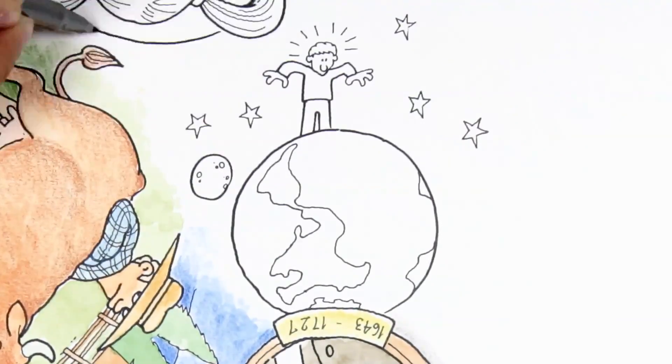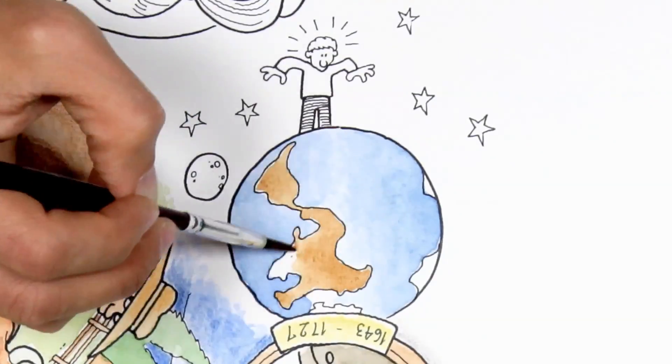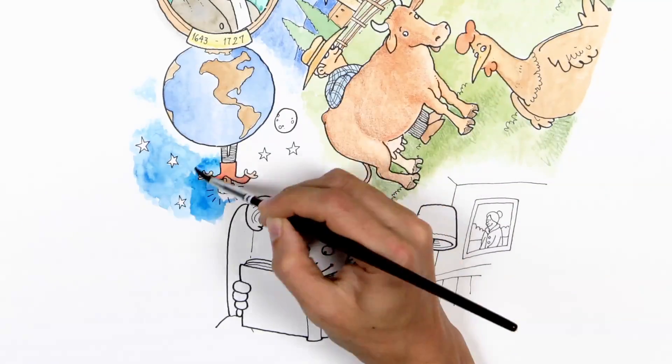Two bodies are attracted to each other simply because they have mass. Better yet, we are attracted to Earth and we attract Earth, and this is why we're stuck on it.